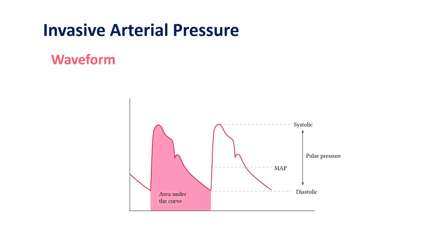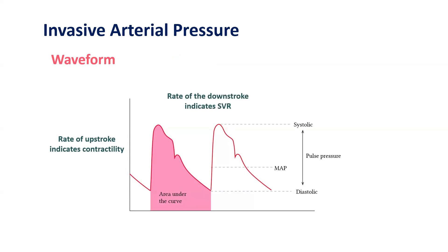The arterial pressure waveform provides important information. The rate of upstroke indicates contractility, and the rate of downstroke indicates systemic vascular resistance. The farther out the dicrotic notch, the lower the systemic vascular resistance.